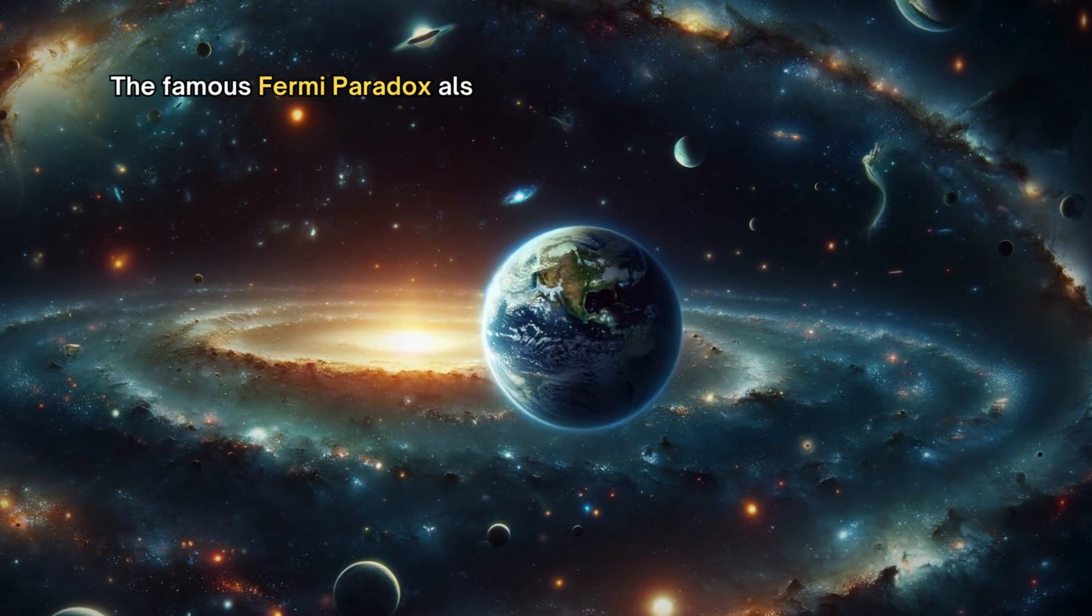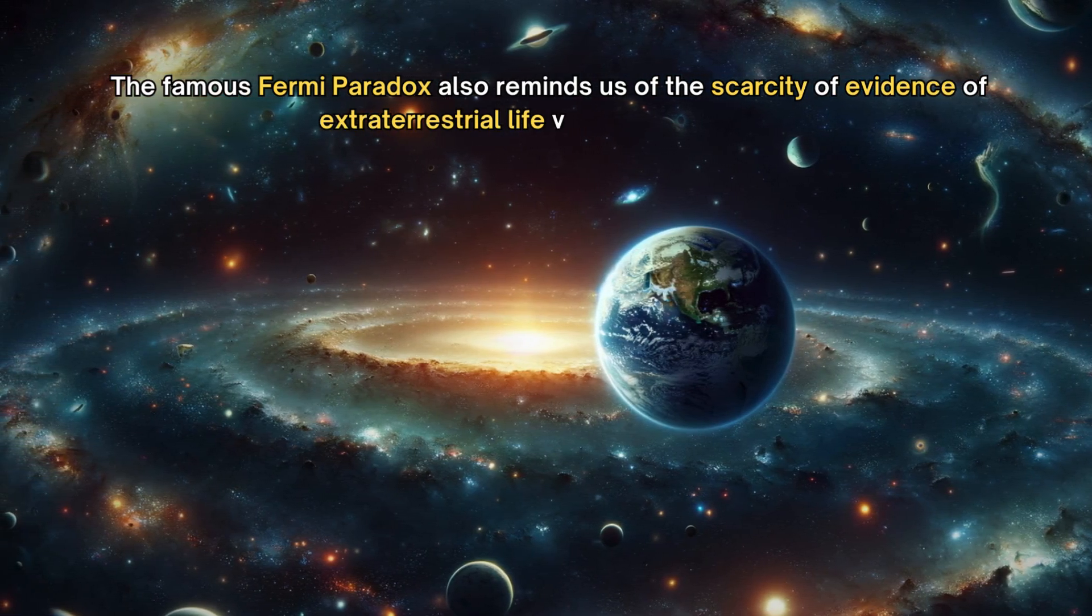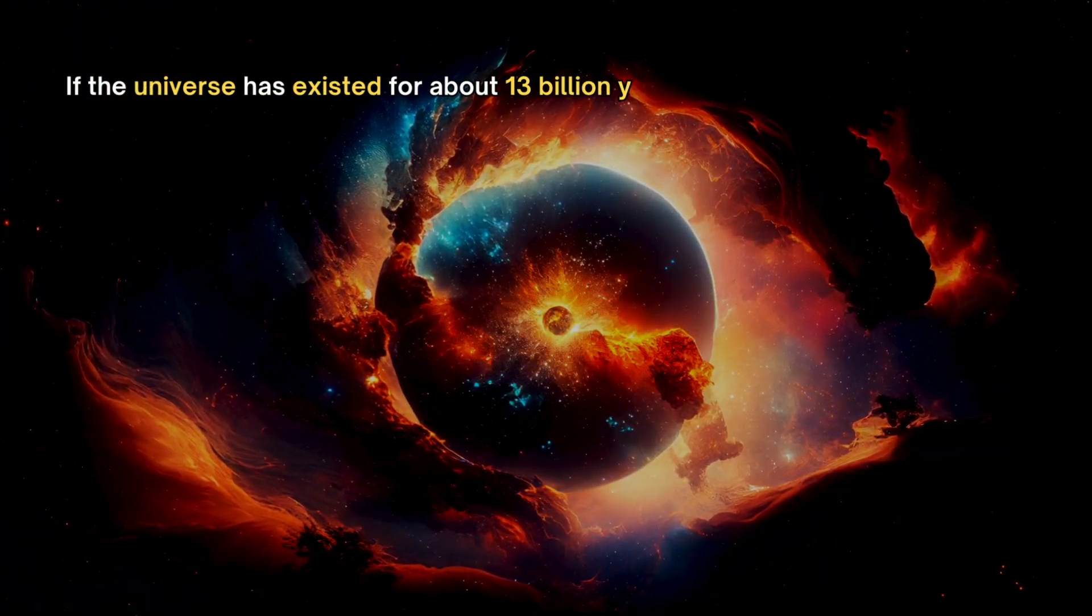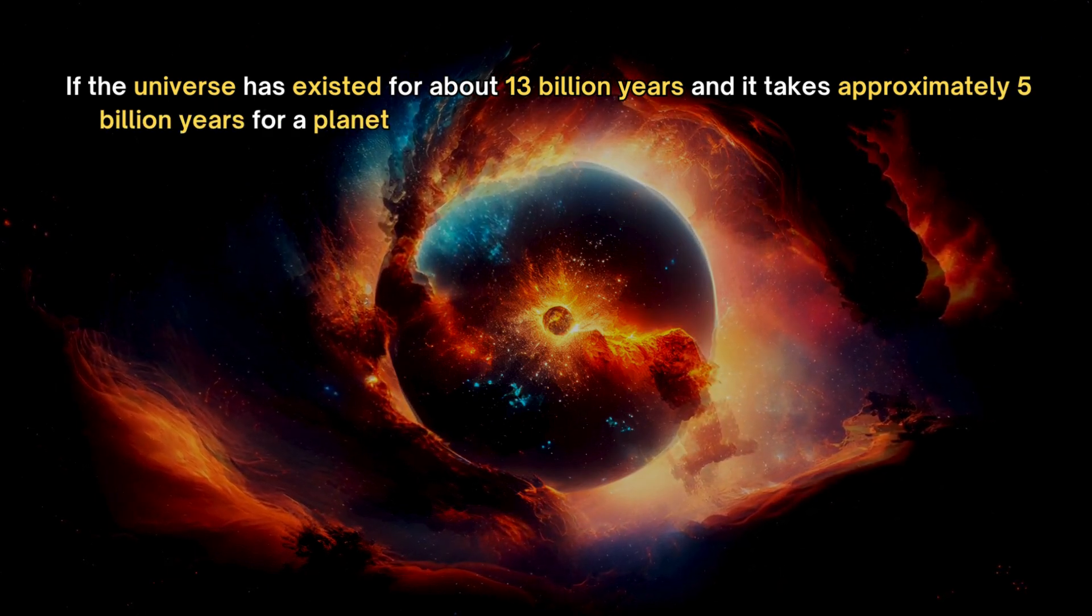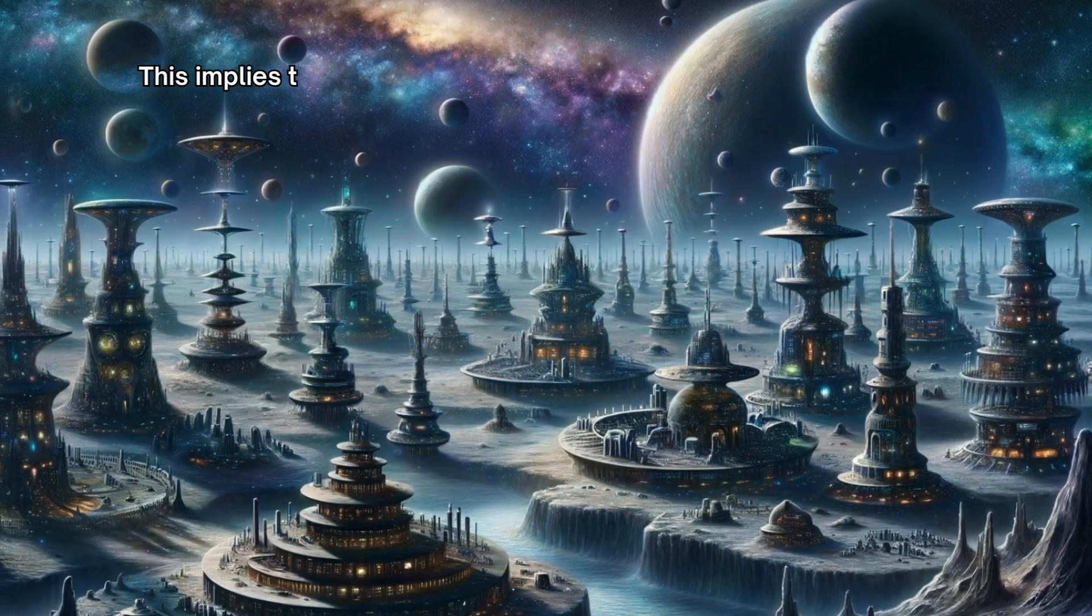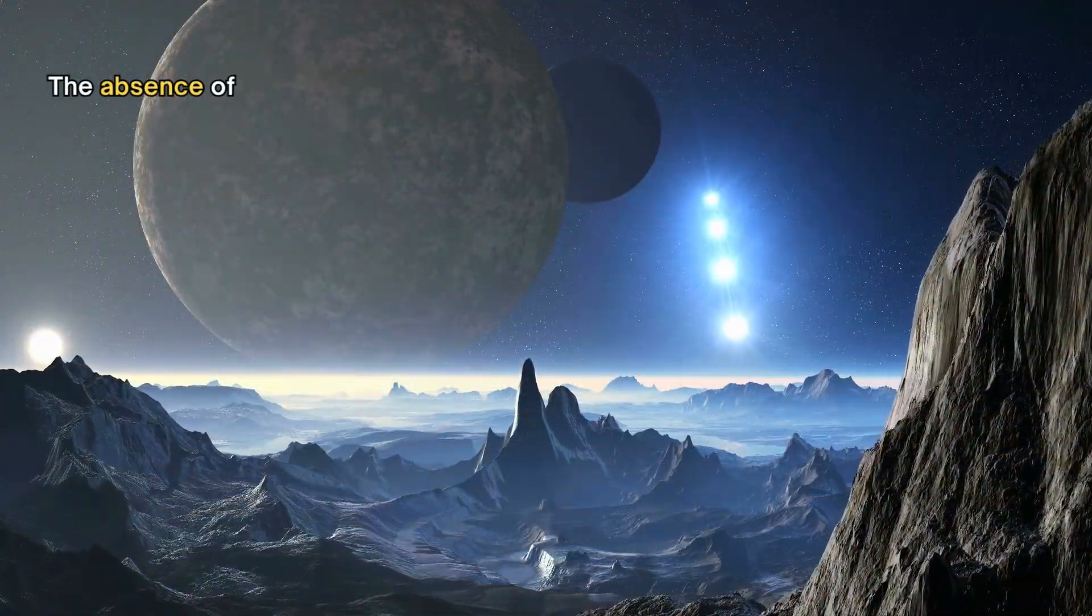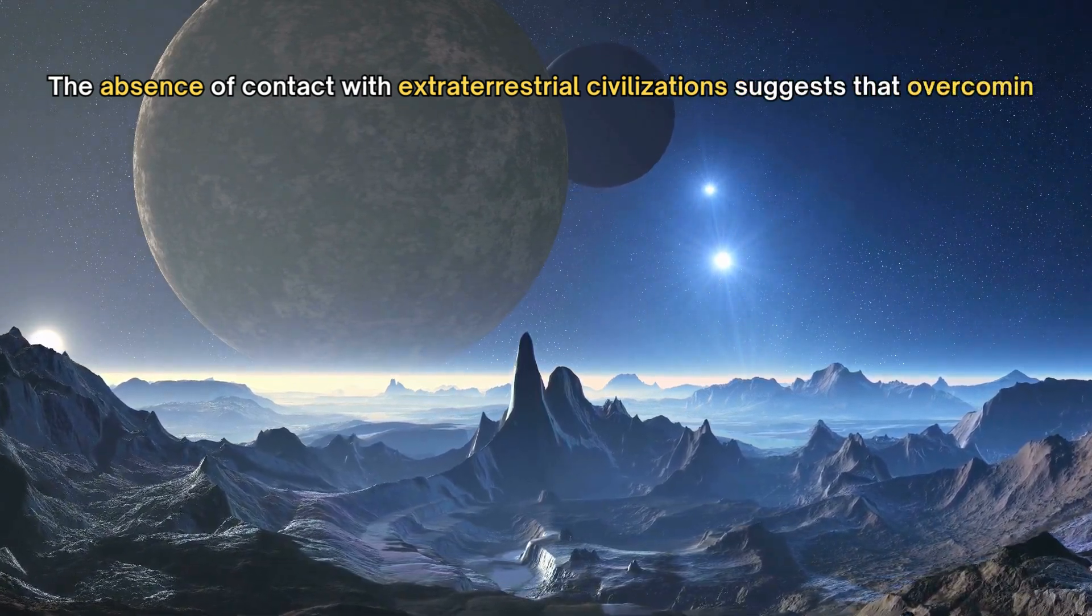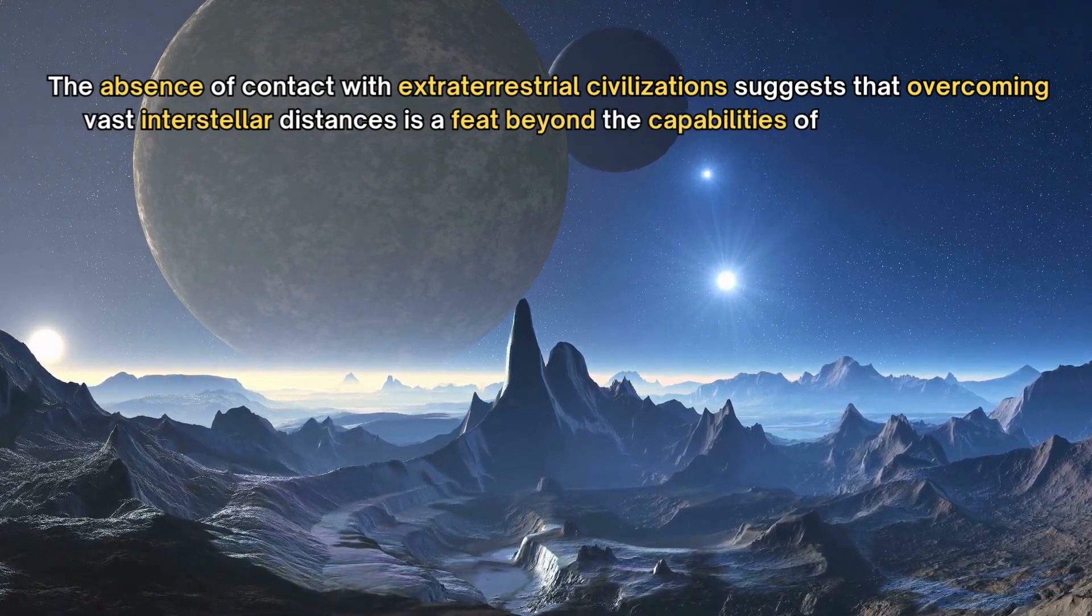The famous Fermi paradox also reminds us of the scarcity of evidence of extraterrestrial life visiting our planet. If the universe has existed for about 13 billion years, and it takes approximately 5 billion years for a planet around a solar-type star to develop intelligent life, this implies that many civilizations would have evolved before ours. The absence of contact with extraterrestrial civilizations suggests that overcoming vast interstellar distances is a feat beyond the capabilities of any civilization.